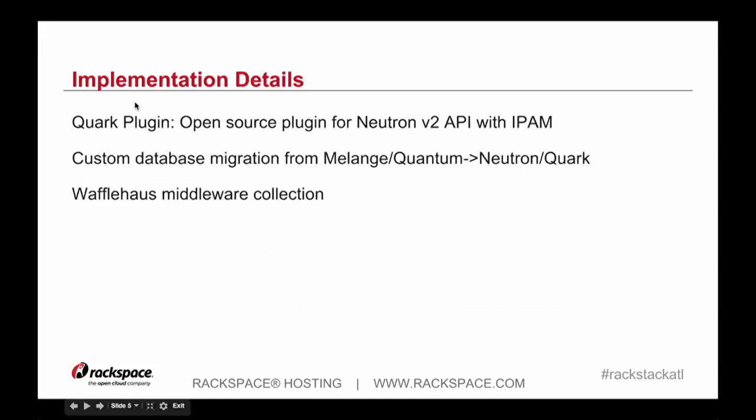What ended up coming out of those requirements is Quark. Basically it's an open source plugin that we wrote in-house for the Neutron V2 API. It also comes along with all the IPAM that we needed to be able to keep track of all the IP addresses within our public clouds. We also needed a database migration to take data out of Quantum and Melange, aggregate that, and put it into our Quark plugin.